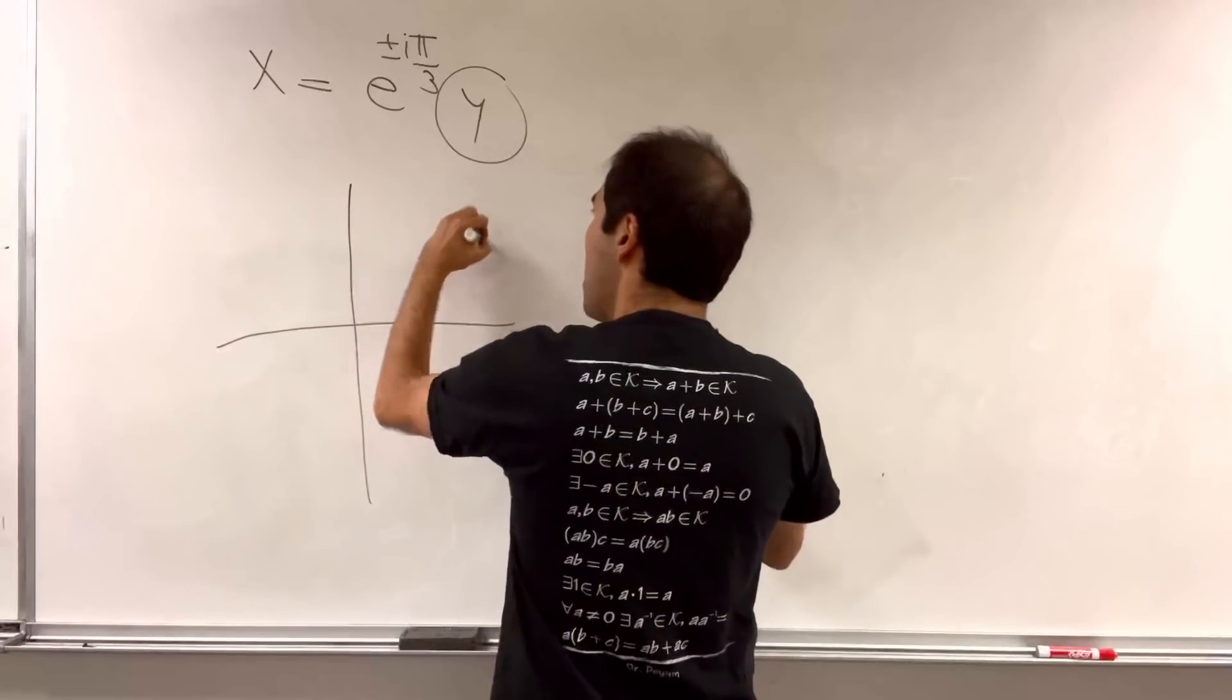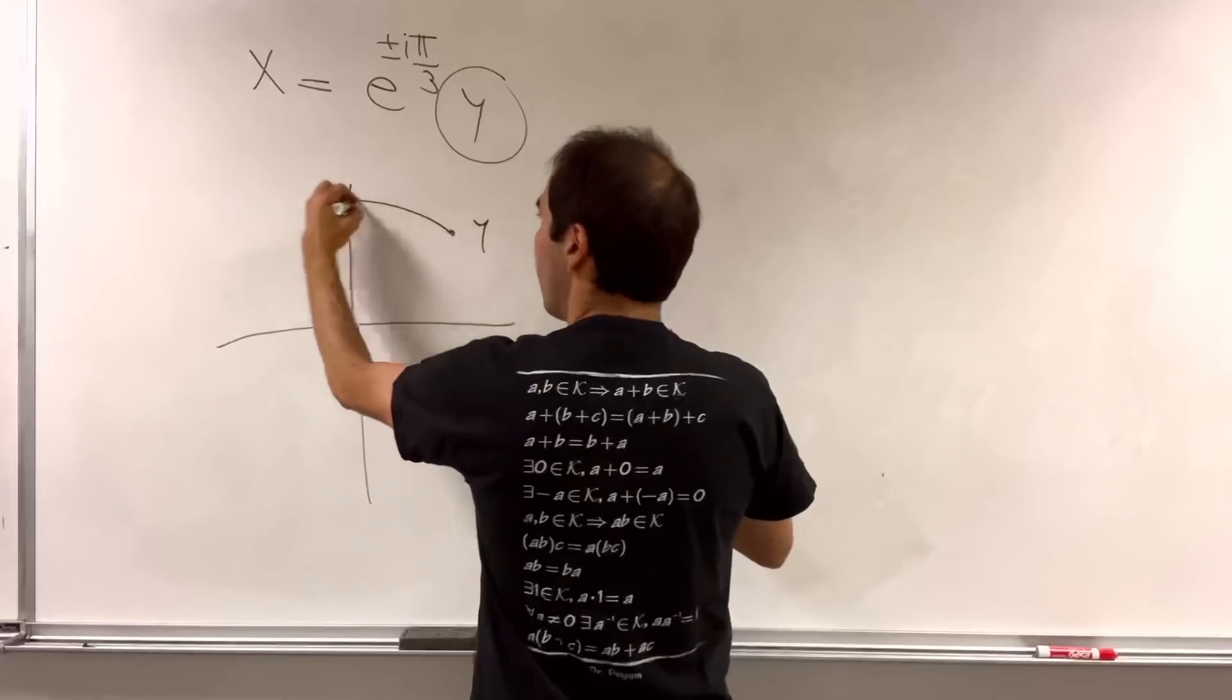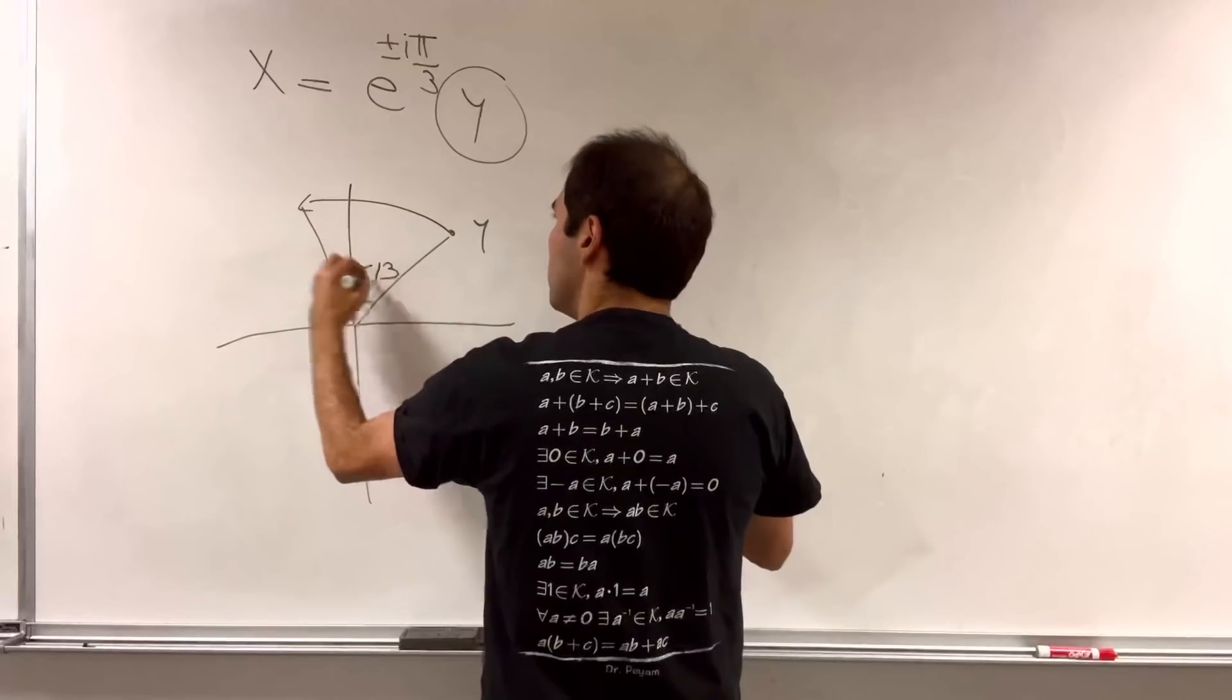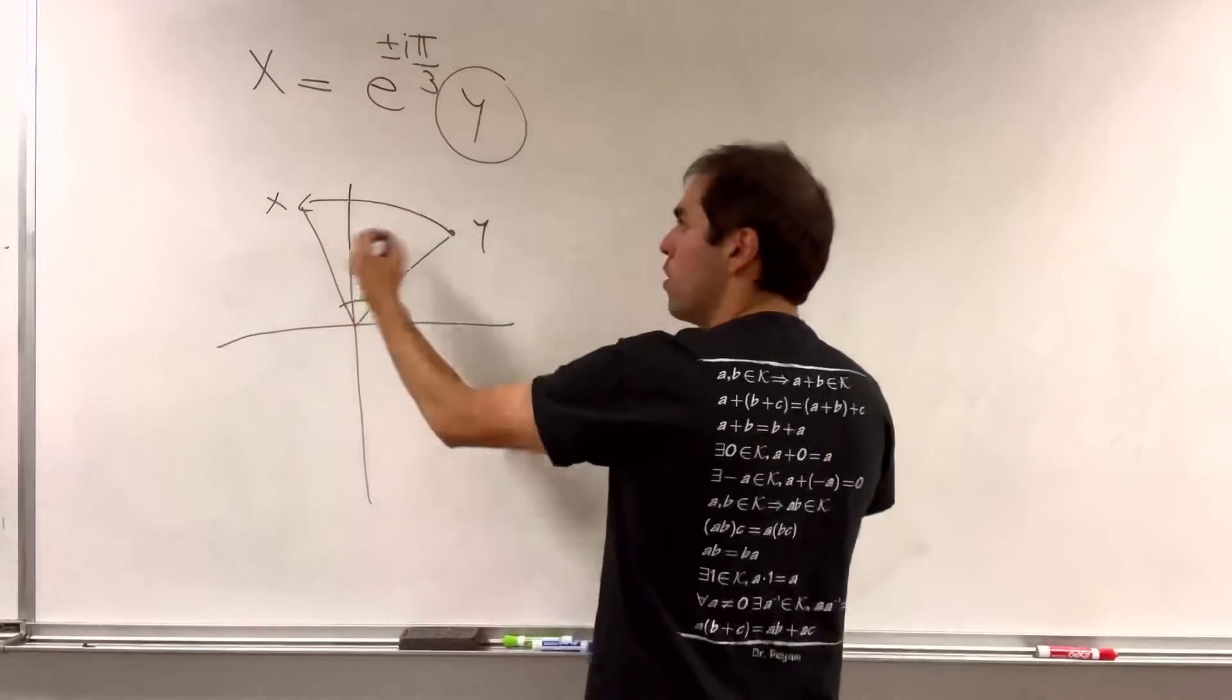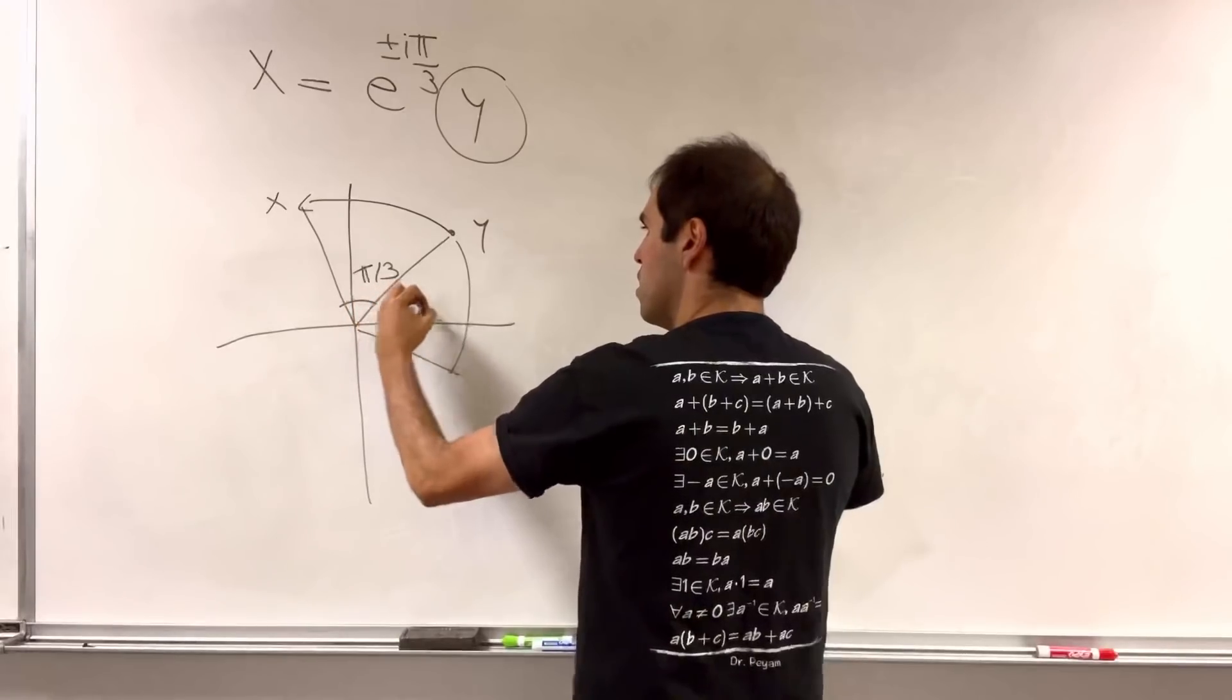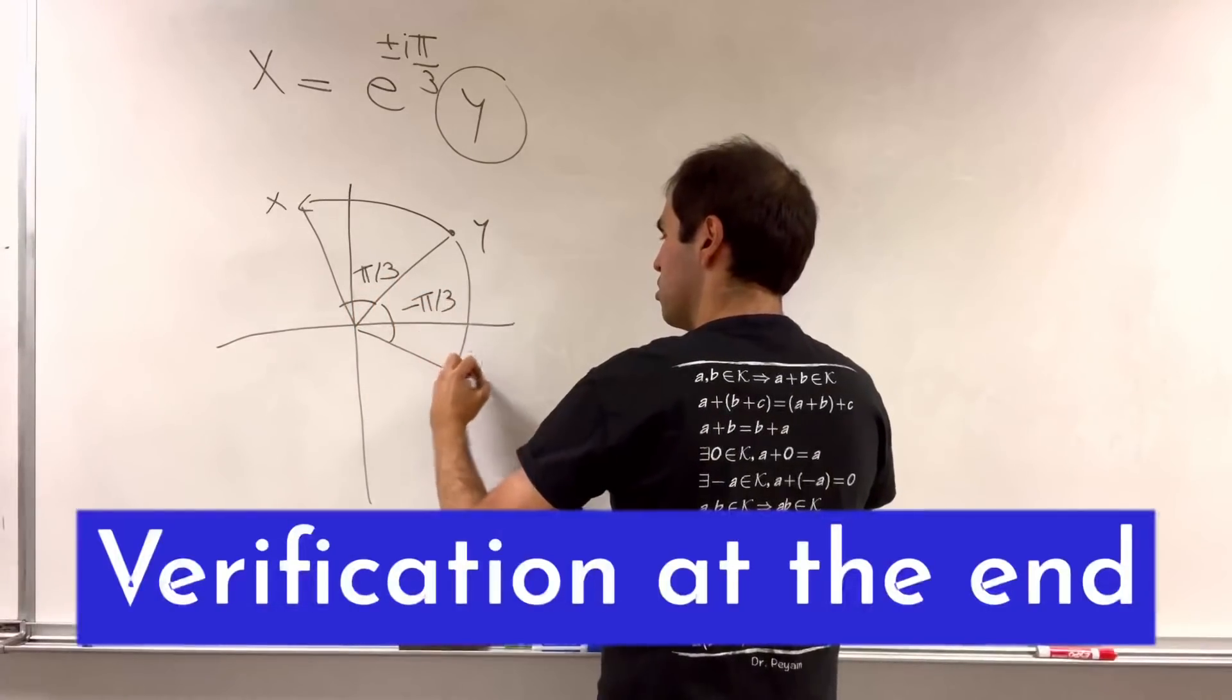To get x, you just rotate y by 60 degrees, or pi over 3, to get x. Or you rotate it by minus pi over 3, maybe here, to get x.